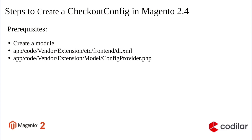So now let's check what are the steps needed to create a checkout config in Magento 2.4. The prerequisites are: first we need to create a simple module. Then we need to create a di.xml under app/code/vendor/extension/etc/frontend directory. Then we require a ConfigProvider.php file which will be created under app/code/vendor/extension/model.